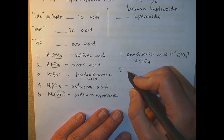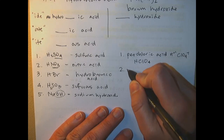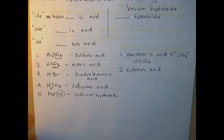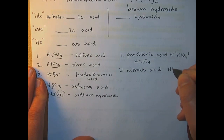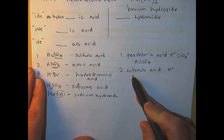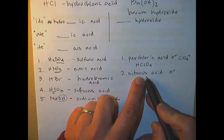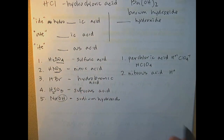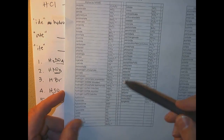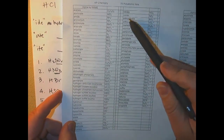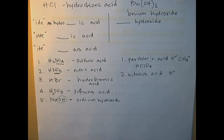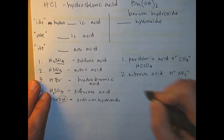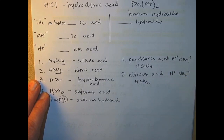For nitrous acid: you know it's an acid so it's going to have H. OUS means the original name was ITE, so you're not looking for nitrous — you're looking for nitrite to crisscross it with. You find nitrite on your sheet: it's NO2 with a minus one charge. They cancel out, so you get HNO2 for nitrous acid.